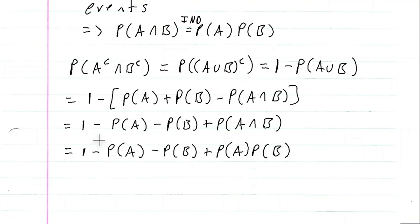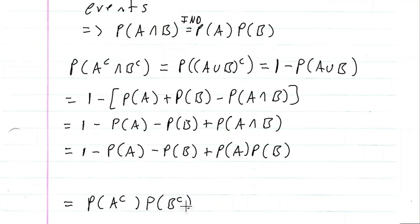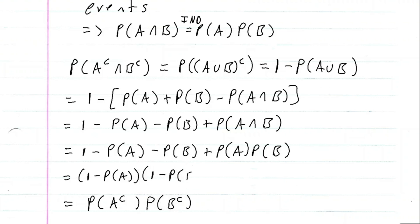Now, you might get stuck at this part. I know where I want to go, so let me give myself some space. I want to arrive at the probability of A complement times the probability of B complement. The probability of A complement is one minus the probability of A, and the probability of B complement is one minus the probability of B.